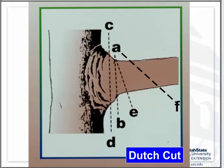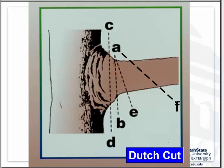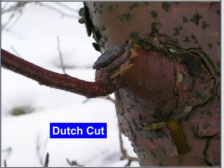The following year after a Dutch cut, you can see that a bud breaks from one of those latent buds on the lower side of the branch, coming out at a nice flat angle — that will produce a lot of flower buds and fruit.